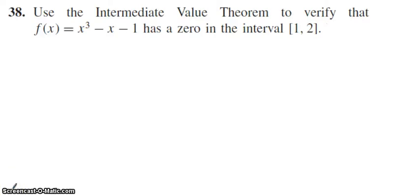In this video, we'll take a look at number 38 from the chapter 1 review. This is a problem where we want to use the intermediate value theorem to verify that this function has a zero on the interval from 1 to 2. So basically, we want to prove that this function is going to cross the x-axis somewhere between x equals 1 and x equals 2.